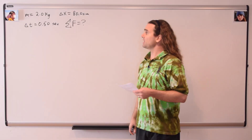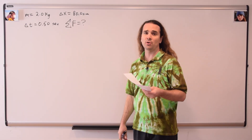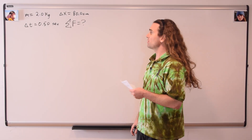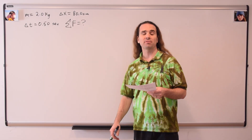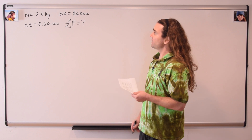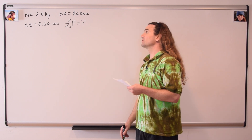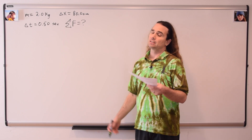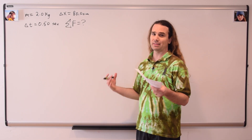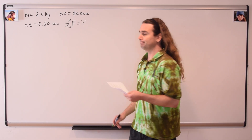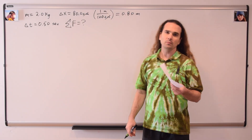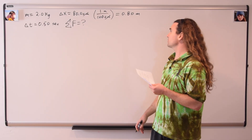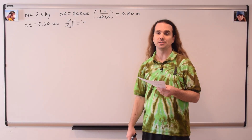We know the mass of the object is 2.0 kilograms, the displacement is 80.0 centimeters, the change in time is 0.50 seconds, and we are solving for the net force. First, convert the displacement from centimeters to meters — it's always a good idea to start by putting everything into base SI dimensions. 100 centimeters equals one meter, so 80 centimeters is equal to 0.80 meters.